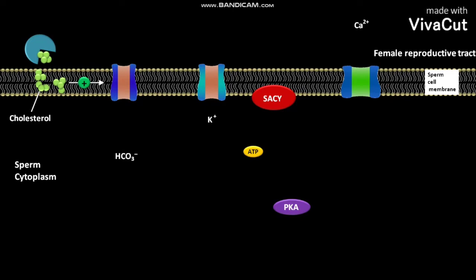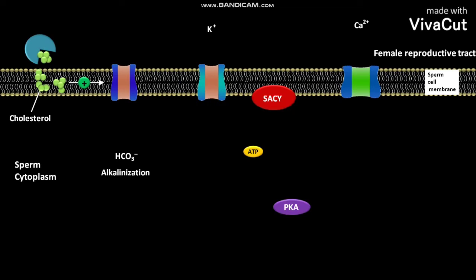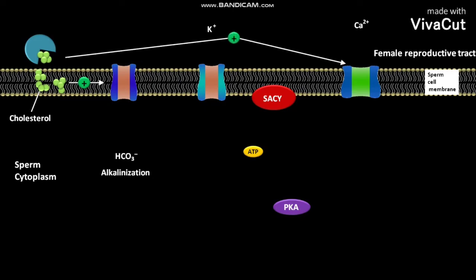The influx of bicarbonate ions and possibly other ions causes alkalinization of the sperm. The cytoplasmic potassium ions then move through a potassium channel and reach the female reproductive tract. The sperm cell membrane potential becomes more negative as the potassium ions leave the sperm. This change in membrane potential allows calcium channels to open, and calcium ions present in the female reproductive tract pass into the sperm cytoplasm.